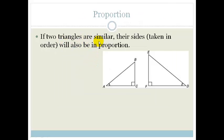If two triangles are similar, their sides taken in order will be in proportion. In other words, if this here is one and this here is two in length...